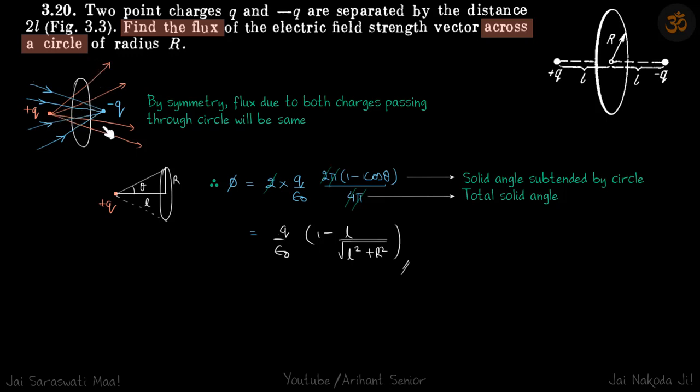First thing, by symmetry you can see that whatever flux is crossing through this region because of plus Q, the same amount will be crossing in the region because of minus Q. And directions will also be same, so both fluxes will get added up.